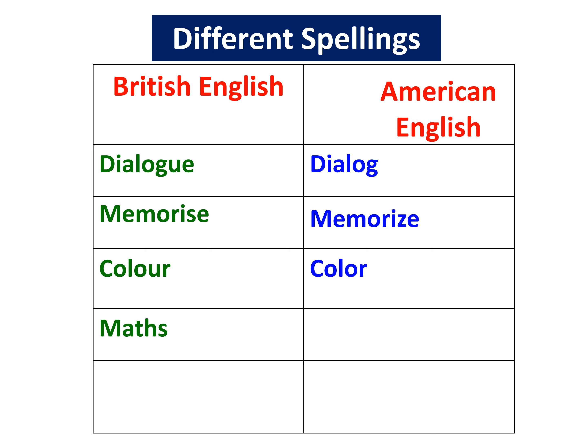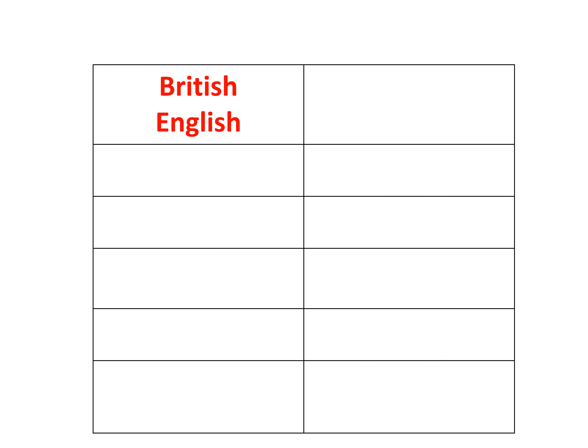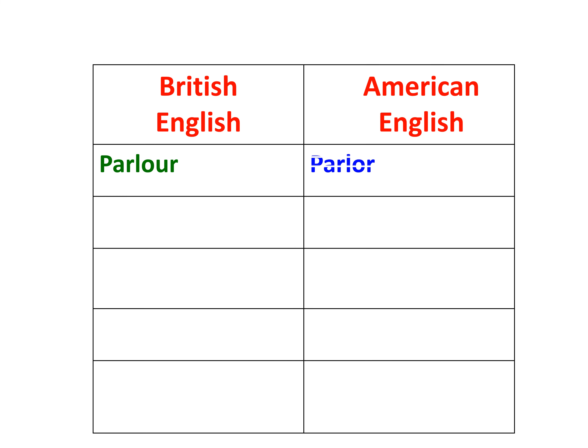Next word is Maths — British English is M-A-T-H-S. American English is M-A-T-H, the last S is dropped. Next word is Skilful — British English has a single L. American English has double L. Next word is Parlour — British English is P-A-R-L-O-U-R. American English is P-A-R-L-O-R, the U is missing.